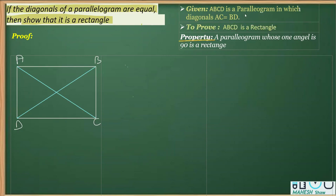What you should know is that by the property, a parallelogram whose one angle is 90 degrees is a rectangle. This is what we need to prove. So keeping in mind that we are going to prove one angle of this parallelogram is 90 degrees.